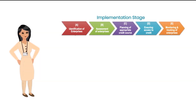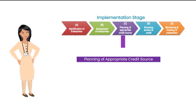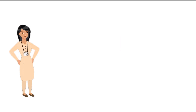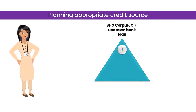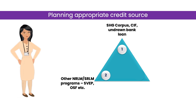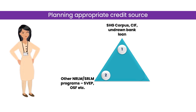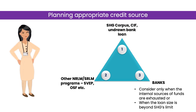The third step in the implementation stage is planning of appropriate credit source for the loan. Vittisakhis and Mentors should first check the internal sources of loans such as SSG's corpus, CIF or un-drawn bank linkage amount. If sufficient funds are available with these sources, then the loan should be given through them. If these are not sufficient, then Vittisakhis and Mentors should check for any funds available under programs such as SVEP, OSF, etc. Only when the internal sources of funds are not sufficient, or when the loan size is beyond the SSG's limit, should loans from banks be considered.